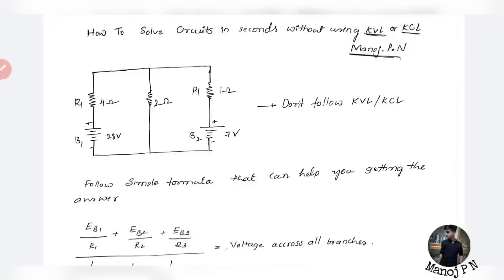Hey guys, welcome back to another video. This is a KCET question — one of the most important types in the question paper. The pattern here involves creating a resistance circuit, and the creators need to have certain configurations. If you imagine the market, there will be a lot of problems, sometimes with a resistance circuit, a capacitor, or a battery-and-resistance combination circuit.